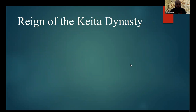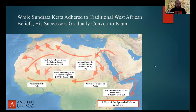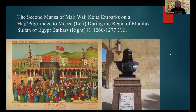This leads us to our next section: the reign of the Keita dynasty. After Sundiata Keita's death, his successors would gradually convert to Islam. It's important to remember that Sundiata Keita was an adherent to traditional West African beliefs, but his successors were not. Fairly early on, the Mansas of the Mali Empire converted to Islam, starting with the second Mansa of Mali, Wali Keita, who embarked on a hajj — a pilgrimage to Mecca — during the reign of Mamluk Sultan of Egypt, Baibars.